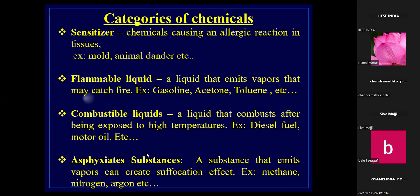A flammable liquid is one that emits vapor which may catch fire — for example, gasoline and acetone. A combustible liquid is one that combusts after being exposed to higher temperatures — for example, diesel fuel and motor oil. Asphyxiates are substances that emit vapor which can cause suffocation — examples include methane, nitrogen, and argon.